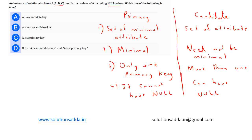The relational schema has distinct values of A including null values, so from this we can say that A is not a primary key. We can rule out option D as well, because since A has distinct values including null values, it is a candidate key. So option A — A is a candidate key — is the correct answer.